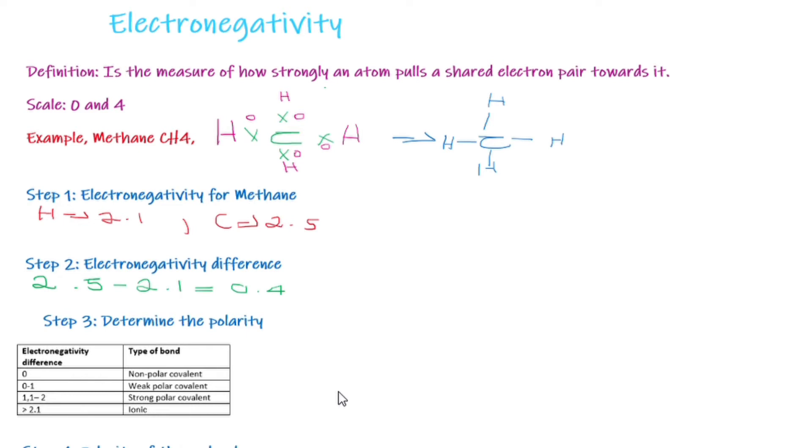1.1 to 2, we have a strong polar covalent, and above 2.1, we have ionic. We got 0.4. It is said to be weak polar.